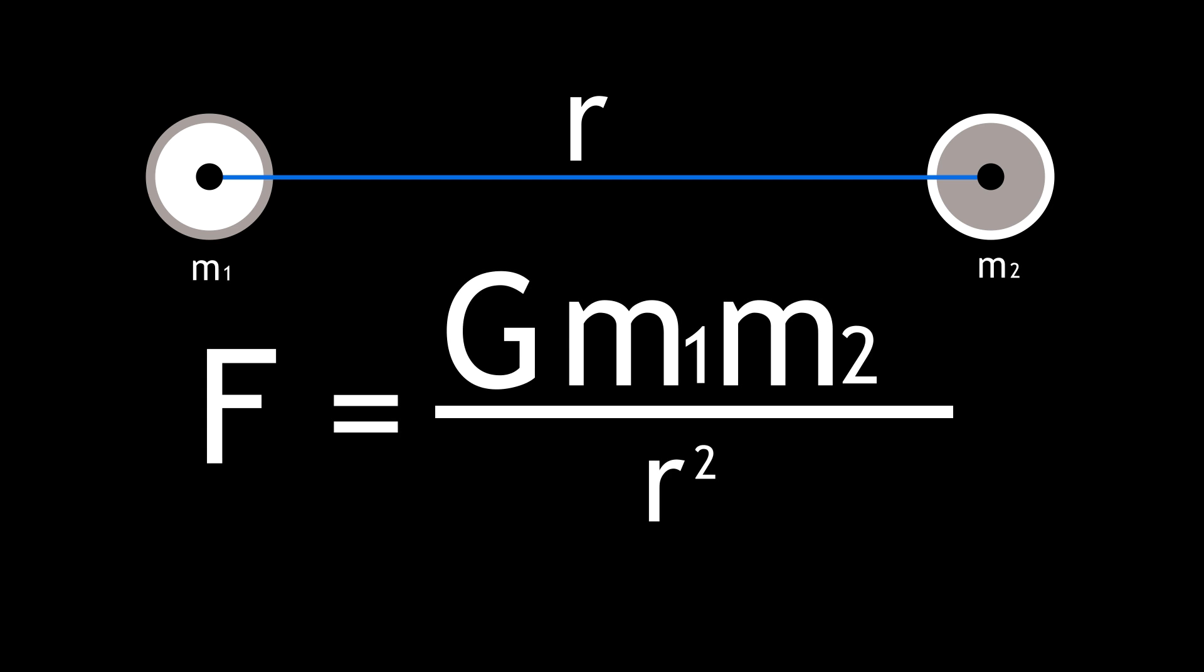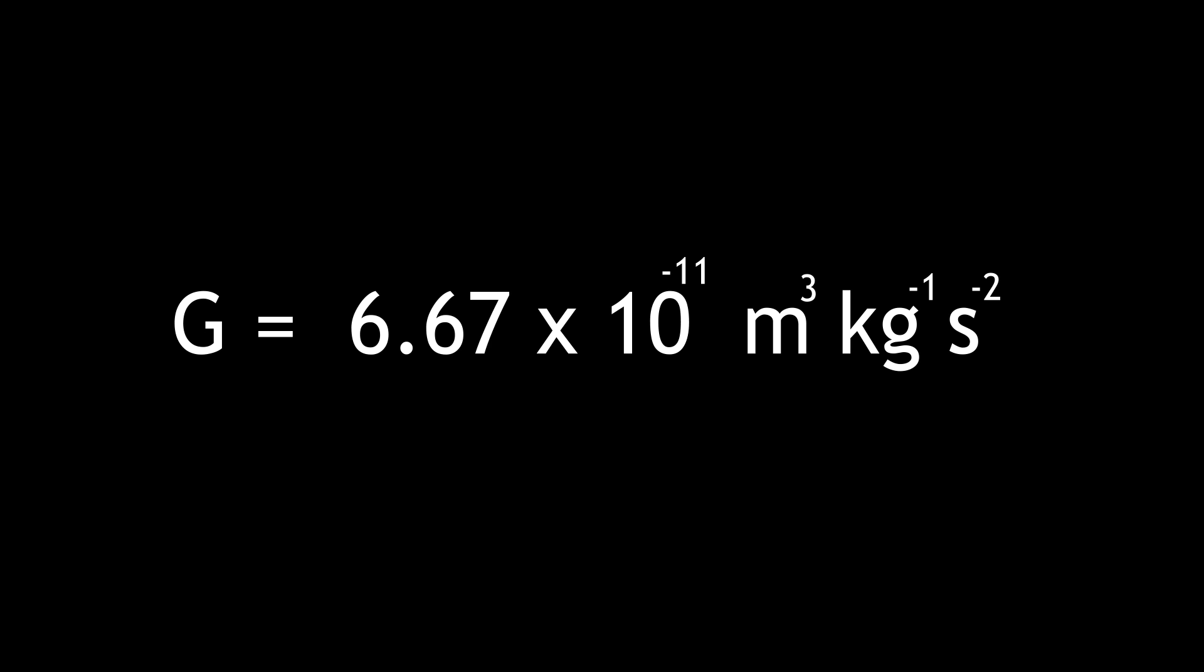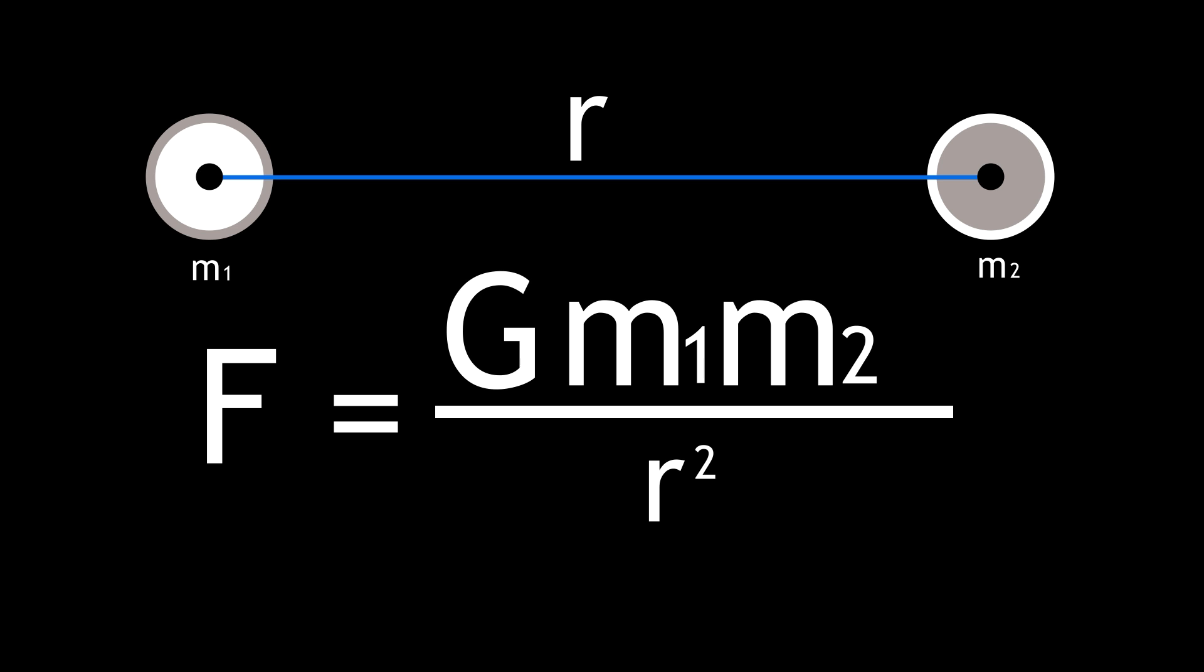Luckily, Newton also provided us with a handy law for calculating the gravitational force between two masses, M1 and M2. F is equal to Newton's gravitational constant, G, times M1, times M2, divided by the distance between the masses squared.